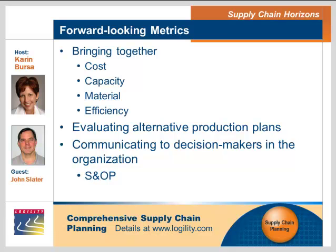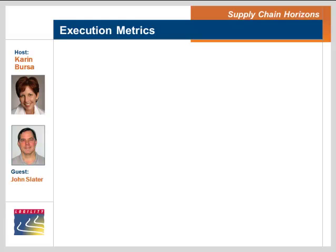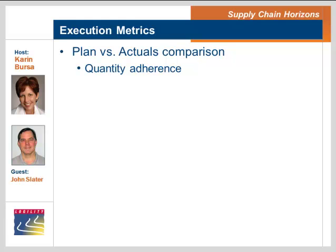As important as those forward-looking costs are, there's another set of evaluations that are equally or perhaps even more useful for certain organizations — comparing how did we do against the plan. We call that plan versus actuals comparison. Some of the metrics people look at are quantity adherence: I was supposed to make 1,000 cases and I made 999 — that was pretty good. Or people may think about hours worked: I was supposed to use 140 hours this week and ended up producing 148 or 150 hours, having to go into overtime to meet requirements for the week.